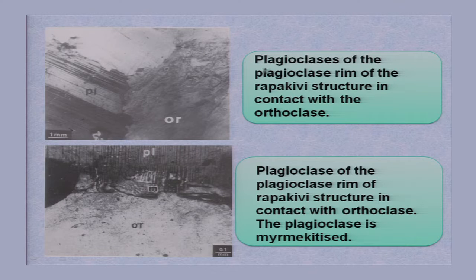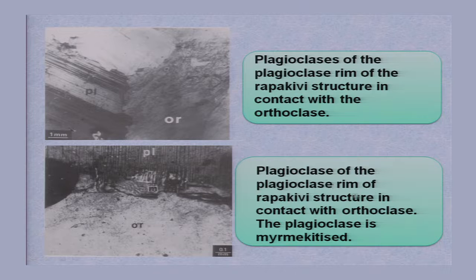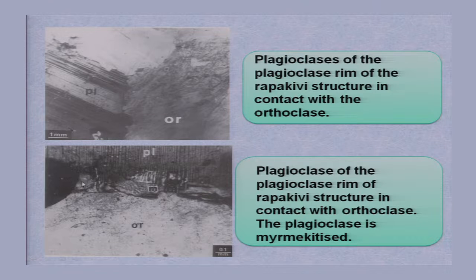The Rapakivi texture under thin section is shown here, but in a different rock. This is the plagioclase rim. This plagioclase crystal is showing repeated twinning and is directly in contact with the orthoclase crystal. This orthoclase crystal is the alkali feldspar crystal, and this is the contact zone.